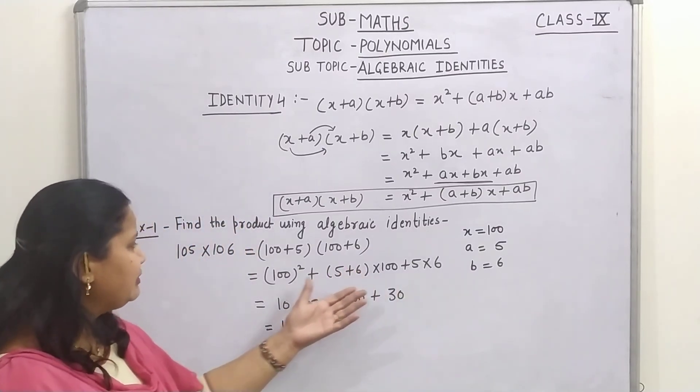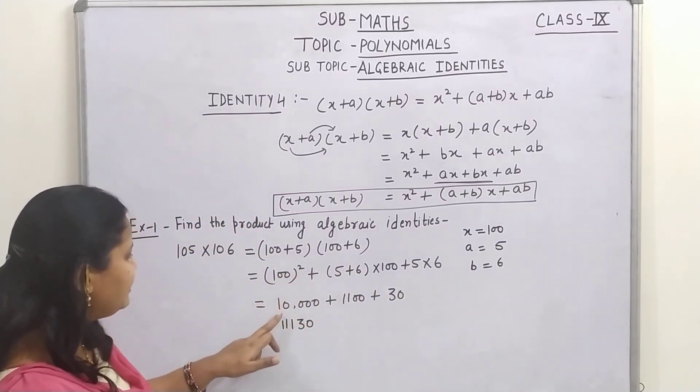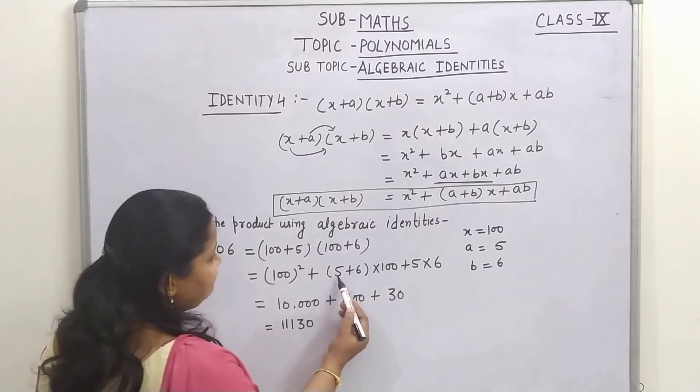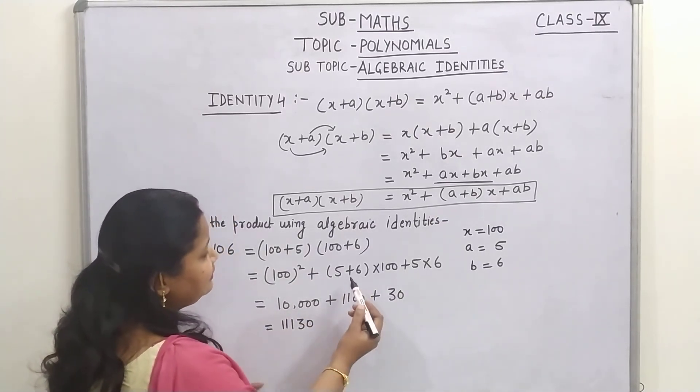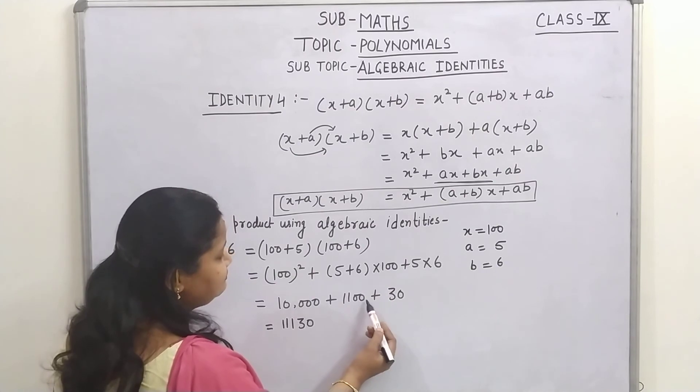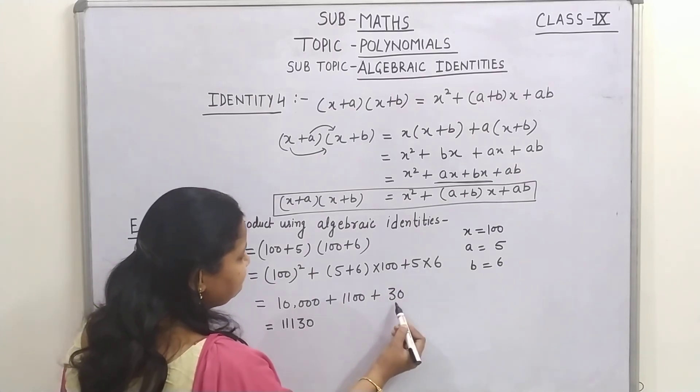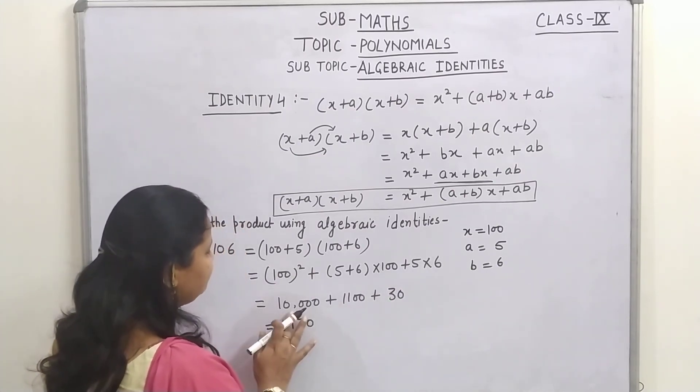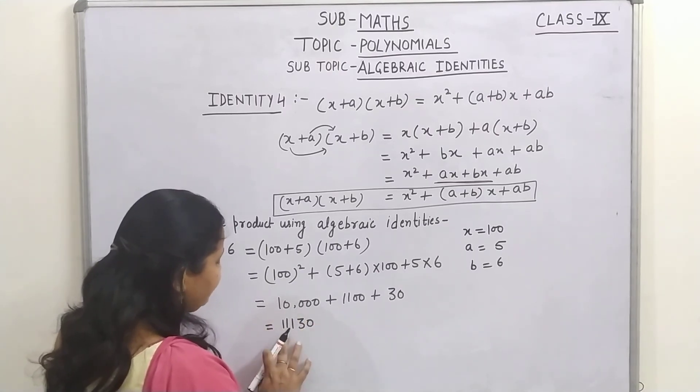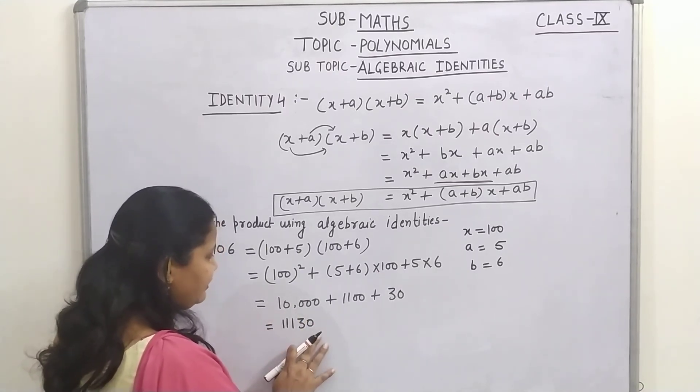Now solve this expression, 100 square becomes 10,000, 5 plus 6 becomes 11 and 11 multiplied by 100 becomes 1,100 and 5 into 6 is 30. Now sum up all these quantities, you will get 11,130.